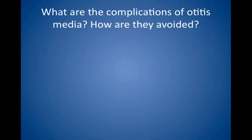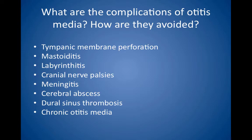What are the complications of otitis media? How are they avoided? Complications include tympanic membrane perforation with bloody or purulent discharge, mastoiditis with fluctuance and inflammation over the mastoid process roughly two weeks after onset, labyrinthitis, palsies of cranial nerves 7 and 8, meningitis, cerebral abscess, dural sinus thrombosis, and chronic otitis media due to permanent perforation of the tympanic membrane. Patients with chronic otitis media may develop cholesteatomas with marginal perforations requiring surgical excision. Otitis media generally is treated with antibiotics including amoxicillin, second-generation cephalosporin such as cefuroxime, or a macrolide.